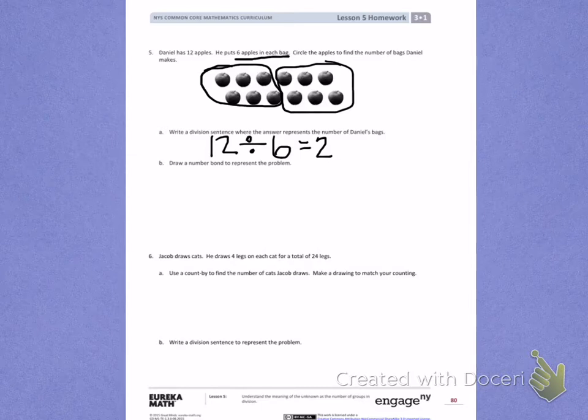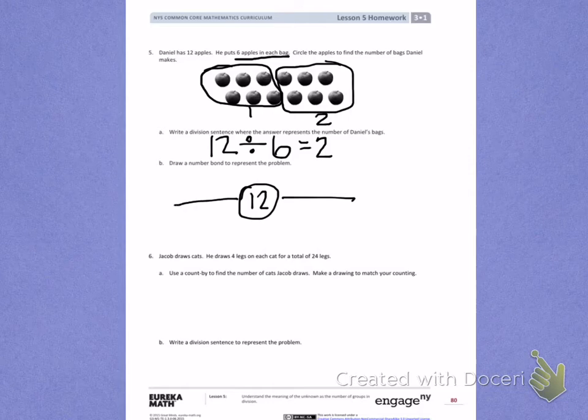Letter B. Draw a number bond to represent the problem. When I draw a number bond, I start with the total. I next divide out the number of groups that I have to represent the legs of the number bond. In this case, I have 2 groups, so I'm going to draw 2 lines coming out from my number bond. Last, the circles on the outside represent the number I have in each group. In each group, I have 6 apples, so I will put 6s into each of those circles to finish my number bond.